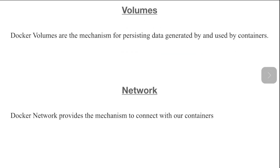Let's talk about Docker Volume. A Docker Volume is a mechanism for persisting data. If we want to store data from our container, we generally use Docker Volume. And Docker Network is a mechanism for connecting our containers. We will understand more about volumes and networks in the later videos.